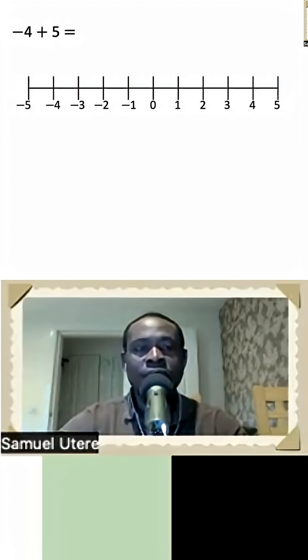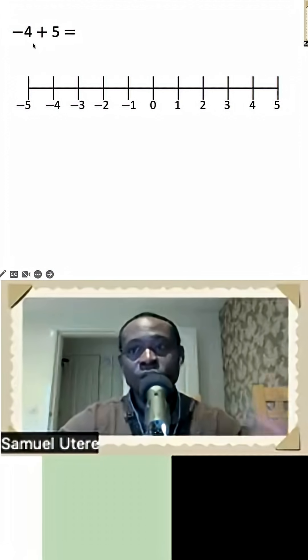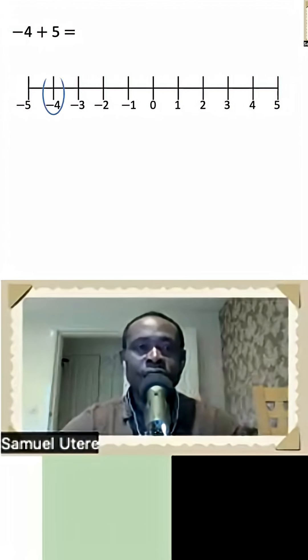That's right. You would have thought, I need to do 4 steps to the right to get to zero. Well, we were asked to add 5 to negative 4. So we just have one more to use, which means negative 4 plus 5 is 1.